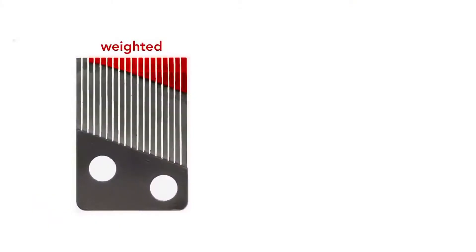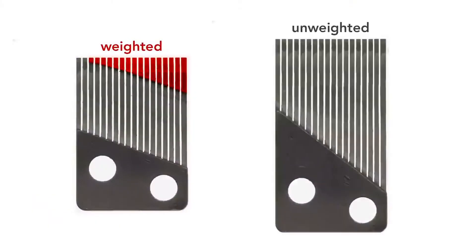For this particular design, if the comb were unweighted, it would have to be roughly 40% longer to produce the same range of frequencies. Another advantage of the weighting is that the combs can be mass manufactured in a single size. You just cut away the proper amount of material to produce a unique set of notes. For example, although each comb has 18 notes, the specific notes vary for a particular song.